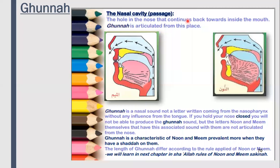Assalamu alaikum warahmatullahi wabarakatuh. Today we're going to go through the Ghunnah. The Ghunnah emanates from the nasal cavity, which is also referred to as the khayshum in Arabic. It is the hole in the nose that continues back towards inside the mouth. It is a sound that comes out or emanates through the nose and flows from the back of the throat through the mouth passage.